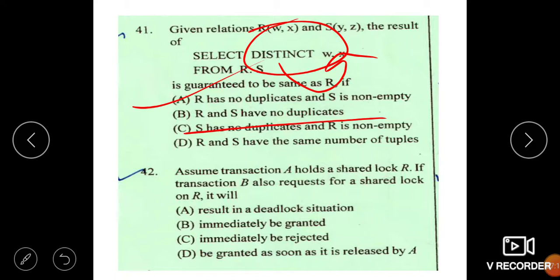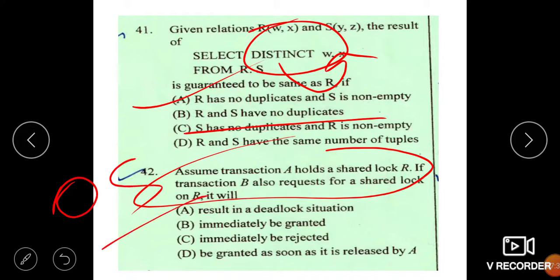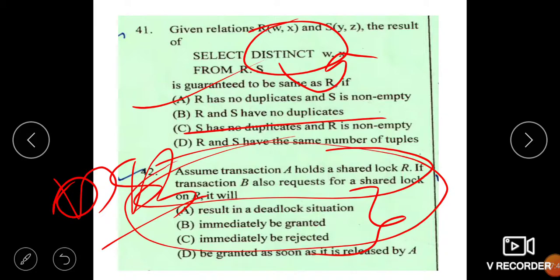Assume the transaction A holds a shared lock. This is deadlock. This question is asked in operating system. In DBMS, they have a chapter that is concurrency control. In concurrency control, this chapter is included. I skip this question. Later I will discuss the answer.